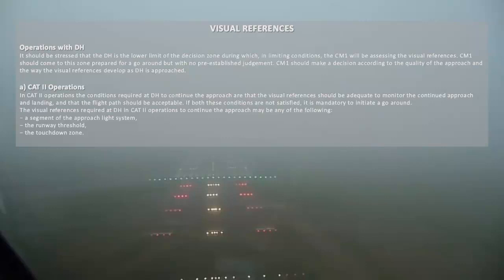Operations with Decision Height. It should be stressed that the decision height is the lower limit of the decision zone, during which, in limiting conditions, the CM1 will be assessing the visual references. CM1 should come to this zone prepared for a go-around but with no pre-established judgment. CM1 should make a decision according to the quality of the approach and the way the visual references develop as Decision Height is approached.